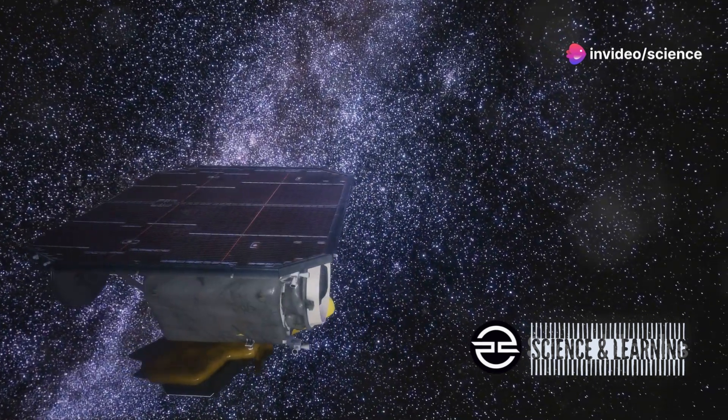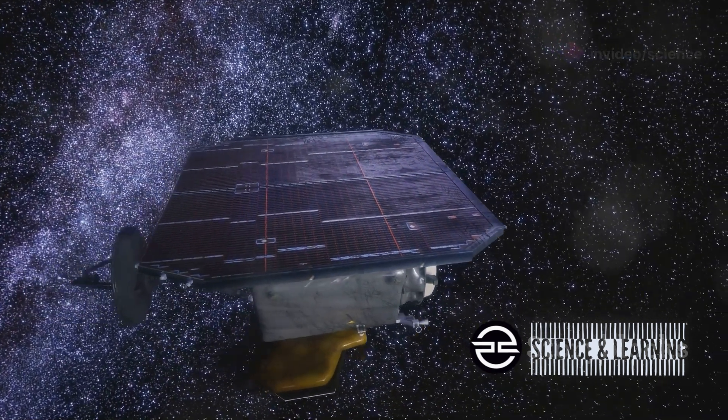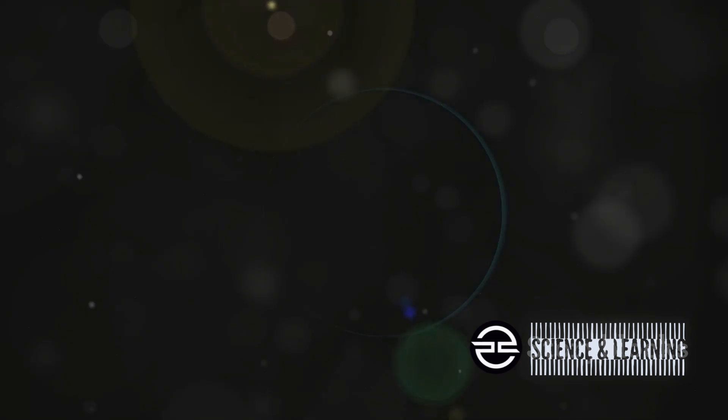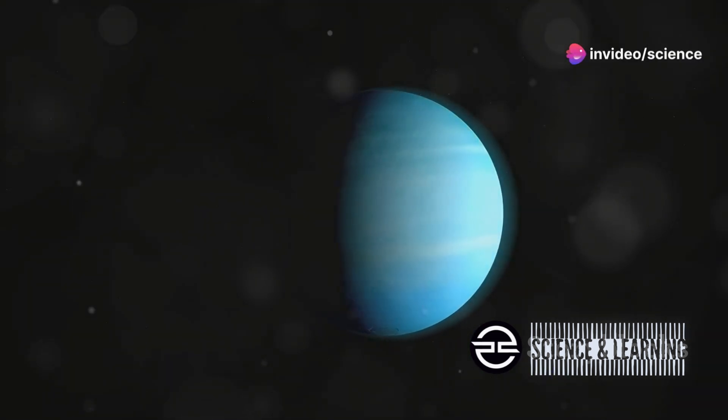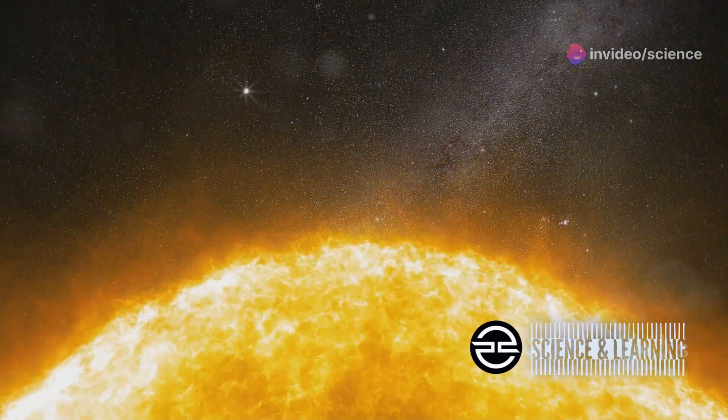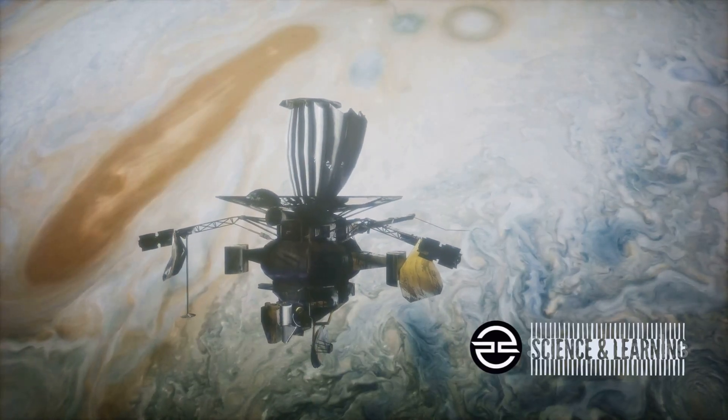NASA's Transiting Exoplanet Survey Satellite, or TESS, is our spacefaring detective. It scours the cosmos for telltale winks of starlight. These winks, or dips in a star's brightness, can reveal the presence of an orbiting planet. TESS has been tirelessly scanning the sky, observing thousands of stars, searching for distant worlds.